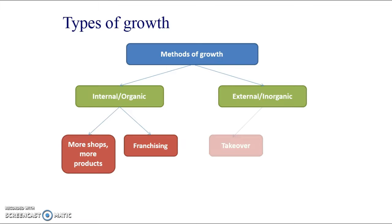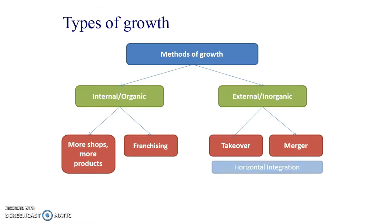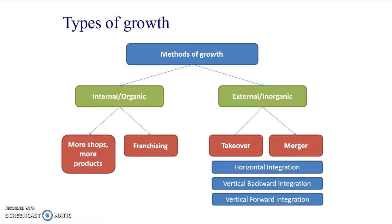Now we're going to look from the perspective of larger businesses as the franchisor - selling to a franchisee. Then we've got external or inorganic growth, which includes takeovers and mergers. Within these we get horizontal integration, vertical backward integration (sometimes called backward integration in the AQA textbook), vertical forward integration, and diversification - sometimes called conglomerate growth.